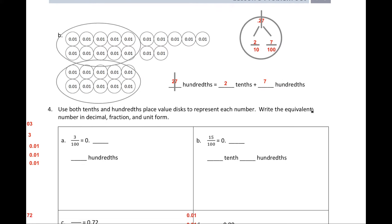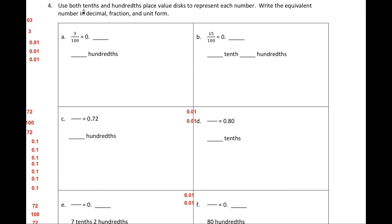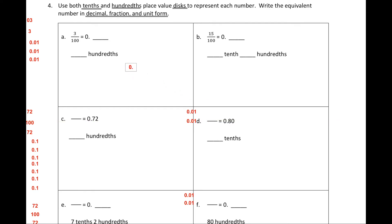Now let's move on to question four: use both tenths and hundredths discs to represent each number. Write the equivalent in decimal, fraction, and unit form. A tenth disc is represented as 0.1, and a hundredth disc is represented as 0.01.